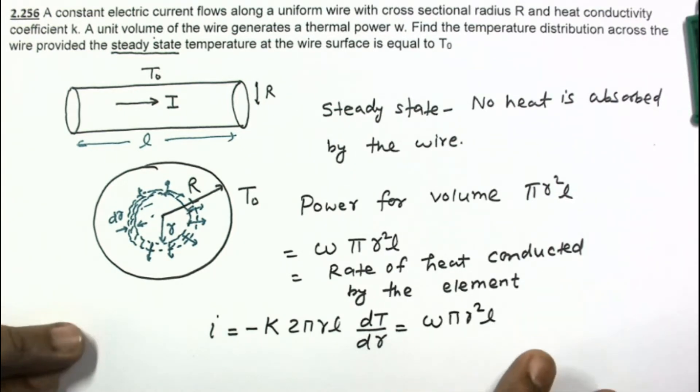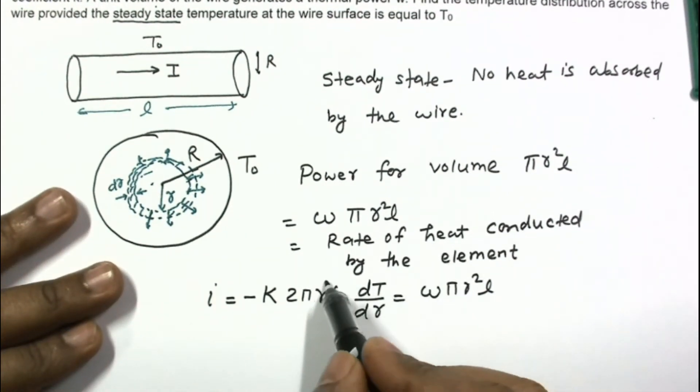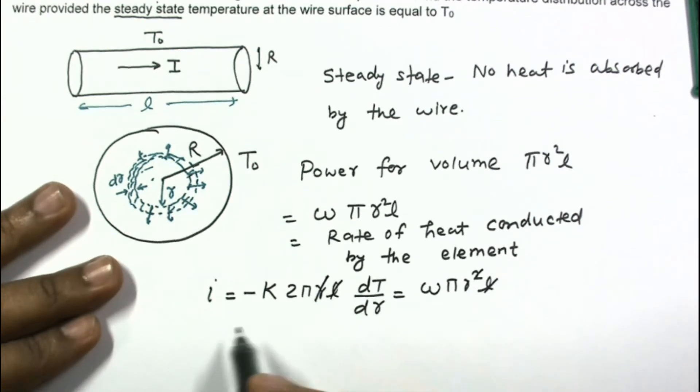So this is the equation which is to be formed for solving this question. One r will be cancelled. L is cancelled. And this dT is equal to, π is also cancelled, -ω/2K. And one r will be here, r dr.